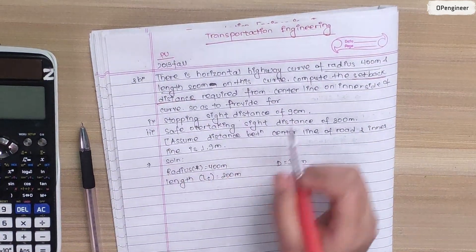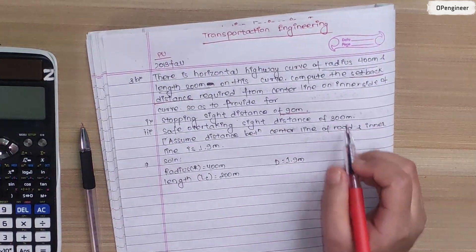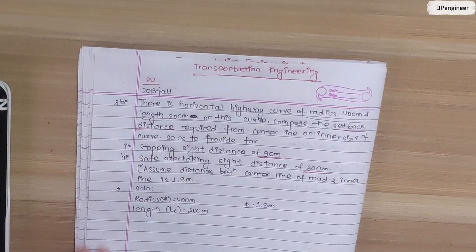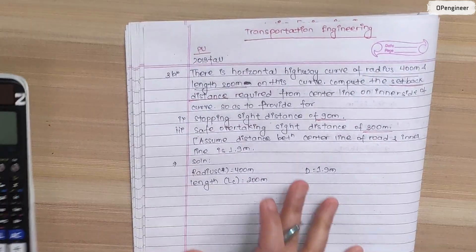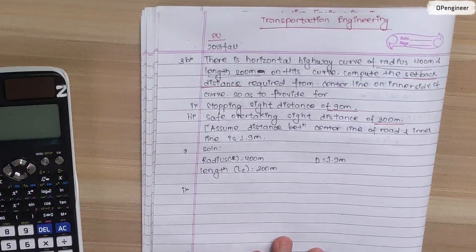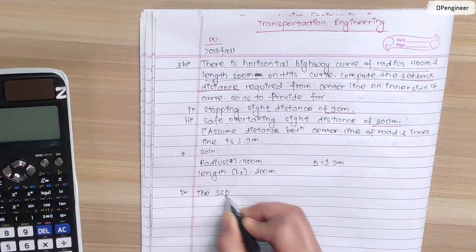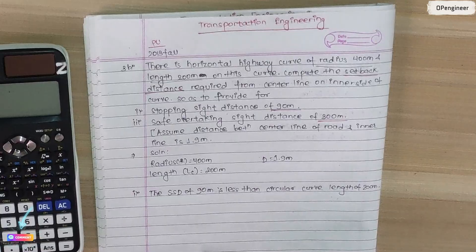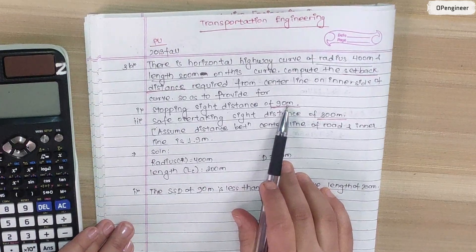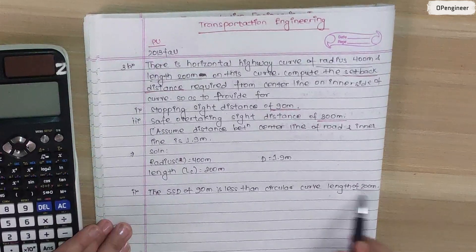The stopping sight distance is 90m and the safe overtaking sight distance is 300m. The stopping sight distance of 90m is less than the circular curve length of 200m.